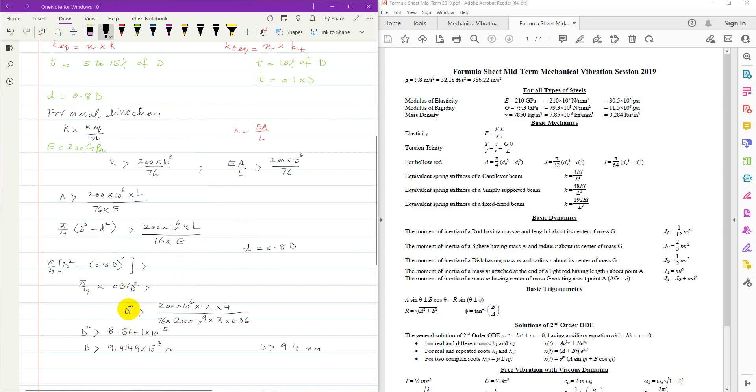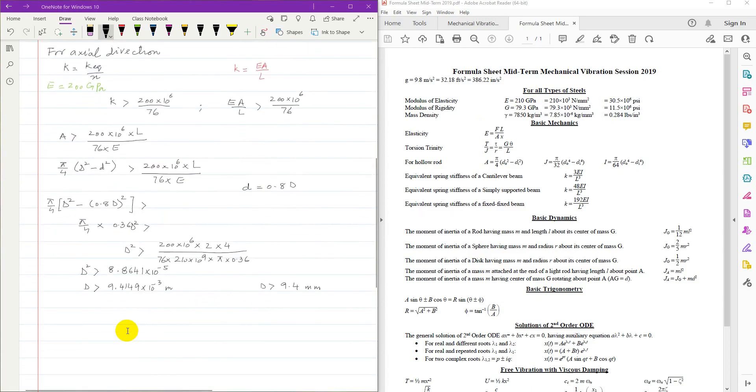Now I can make D as a subject. So 200 into 10 to the power 6 times length of the tube which is 2, that 4 is divided here and goes on the other side, 76 into E which is 200 gigapascal, divided by pi divided by 0.036. So D squared comes as 8.8641 into 10 to the power minus 5 and D is greater than 9.4149 into 10 to the power minus 3 meter. So D should be greater than 9.4 millimeter.